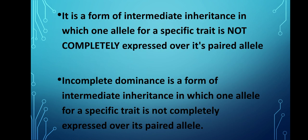Incomplete dominance is a form of intermediate inheritance in which one allele for a specific trait is not completely expressed over its paired allele.